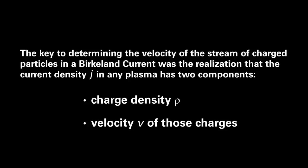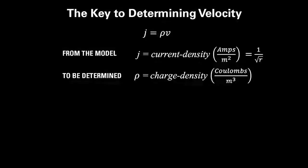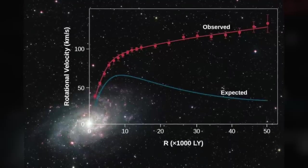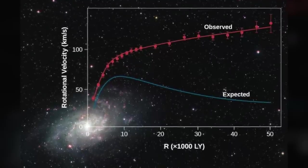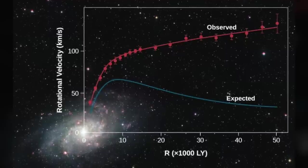The charge density is how much charge you have per cubic meter, and the velocity is how many meters per second does that box of charges travel with. Therefore, if we know any two of these three quantities - j, rho, and v - we can find the third one.